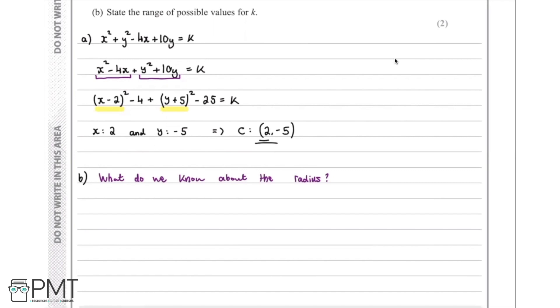So now we'll take a look at part B of the question where we're asked to state the range of possible values for k. So we first must think about what is the radius. So the radius is a measurement and we know that we cannot have a negative radius and we know that the radius can't really be zero either. Therefore, we know that the radius is going to be greater than zero.